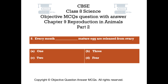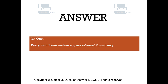Question number 8. Every month, dash, mature eggs are released from the ovary. Option A: 1. Option B: 3. Option C: 2. Option D: 4. The right answer is Option A: 1. Every month, one mature egg is released from the ovary.